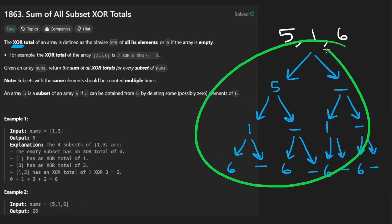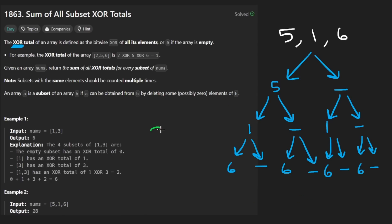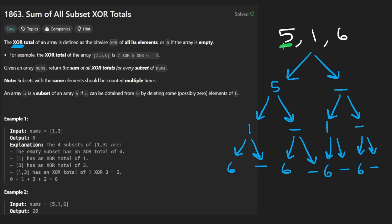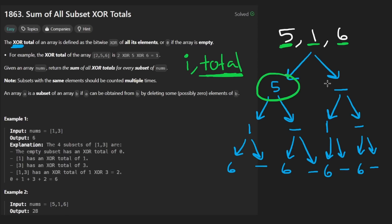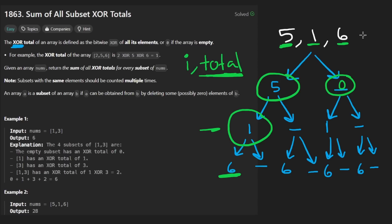The brute force solution is recursive and the time complexity is going to be 2 to the power of N. To implement it, we keep track of which position we're at in the input array using a parameter I. The easiest way is to keep track of the running XOR total as we go. By the time we're at the base case — the end of the array — we just return that total.